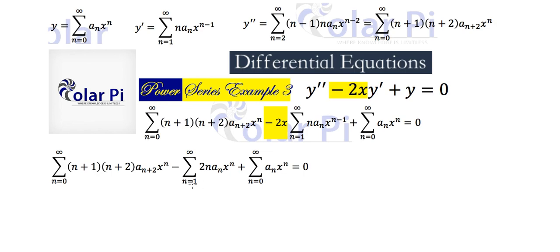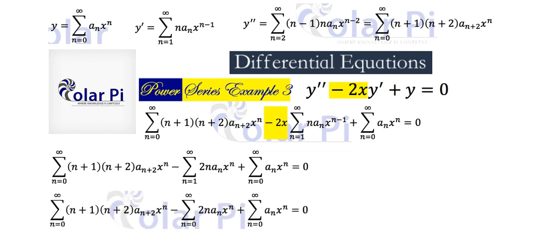Next, we're going to change the lower index of the middle sigma from n equals 1 to n equals 0. We can just do that because if we start at n equals 0, the very first term would be 0 — we'd have 2 times 0 times something, so it's just 0. Since that first term is 0, changing the sum to start at n equals 0 doesn't contribute anything.